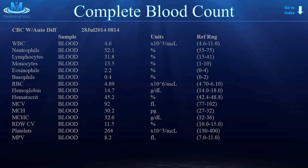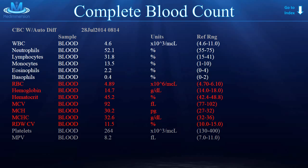So first off, what is a CBC, or a complete blood count? Well, it's a very commonly ordered lab or blood panel that gives us some good information about the cell types in a patient's blood. And those cell types are divided into three main types: white blood cells, red blood cells, and platelets.